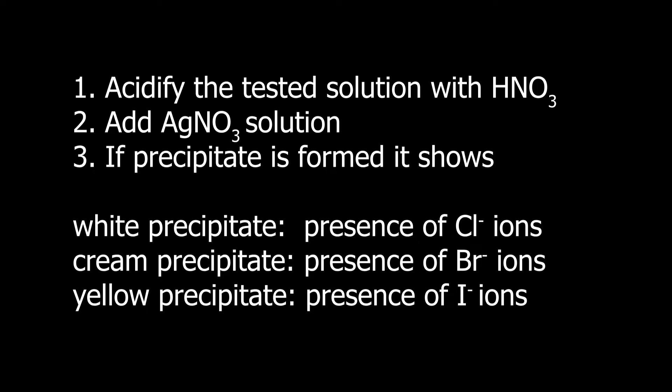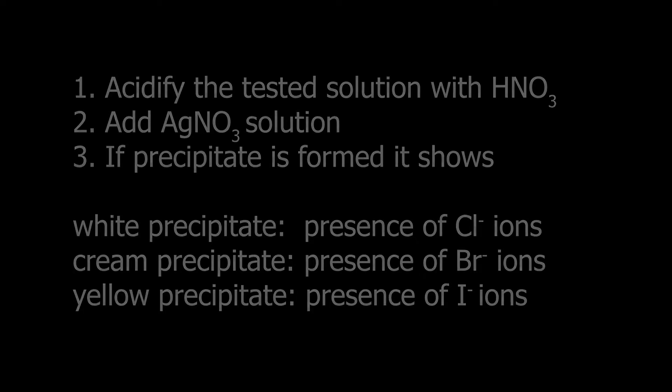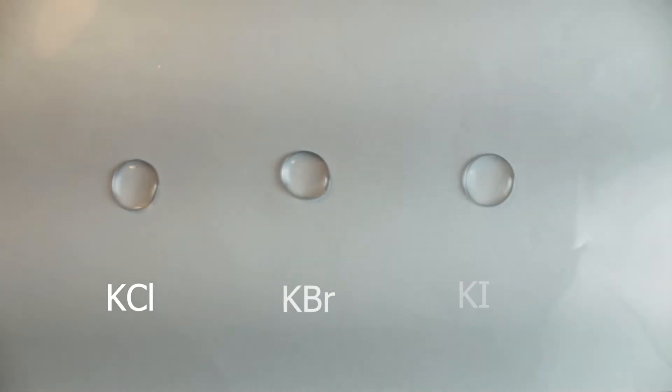White means chloride presence, creamy means bromide, and yellow means iodides. So here I just prepared solutions with chloride, bromide, and iodide.